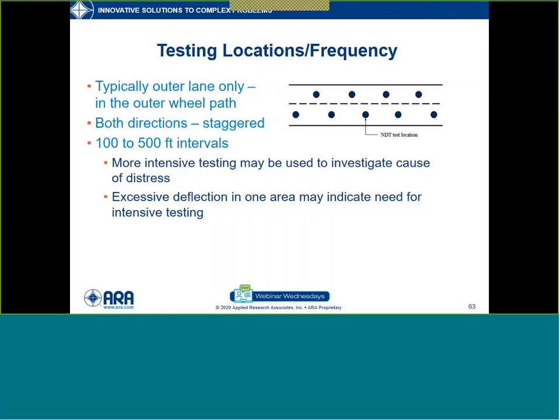We'll now talk about determining where and how FWD test locations should be placed. Usually testing is done in the outer lane. If testing both lanes, it's good to stagger your tests so that you cover more area. Generally points are laid out every 100 to 500 feet intervals. Sometimes there's a need to go back and test again — the first round can isolate bad spots and a second round can close in on those bad spots with even less spacing instead of punching core holes.